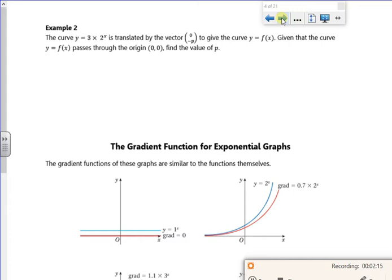So it says the curve of 3 times 2 to the x is translated by the vector 0 minus p. Okay, so that minus p just means I'm moving it p down. So my new graph is 3 times 2 to the x minus p. So it passes through the origin. So that's important now, because it's telling me if it passes through the origin, that when x is 0, y is 0.